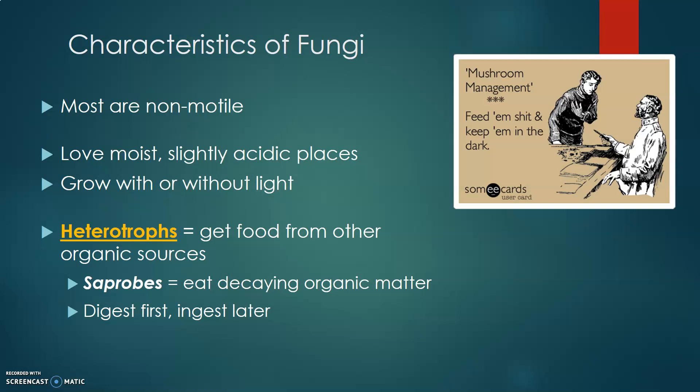Fungi can't make their own food. Most of the time, fungi are what are known as saprobes — organisms that eat decaying or decomposing organic matter. What's interesting is that fungi actually digest their food first and then ingest it. When we eat a sandwich, we ingest it first and then digest it with enzymes in our stomach. Fungi instead secrete enzymes that digest their food externally, then absorb it through their tissues afterwards.